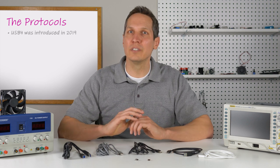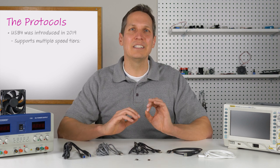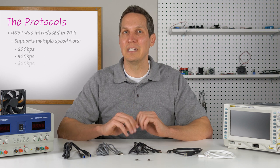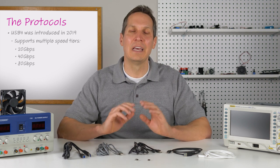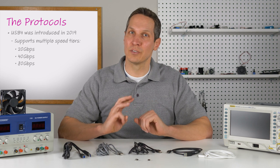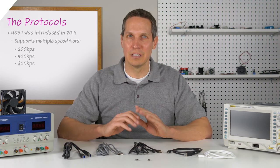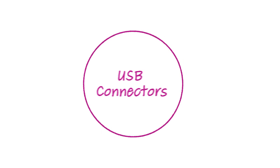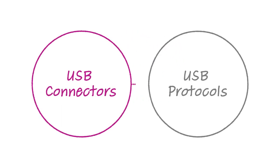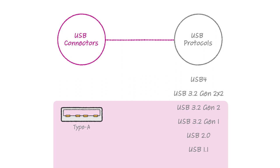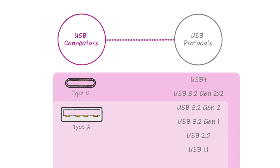Fortunately, USB 4 was introduced in 2019 and supports multiple speed tiers at 20, 40, and now 80 gigabits per second, and hopefully we can leave the whole USB 3 naming mess behind us. The types of connectors and USB protocols are related but separate: Type A connectors can support up to USB 3.2 Gen 2, but to get faster speeds such as USB 3.2 Gen 2x2 and USB 4, you will need to use USB Type C connectors.